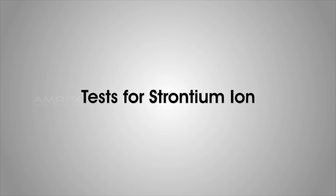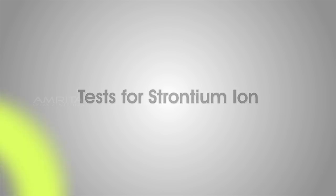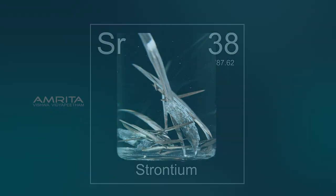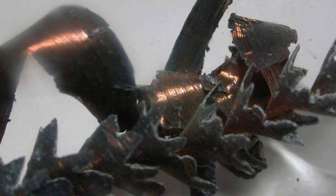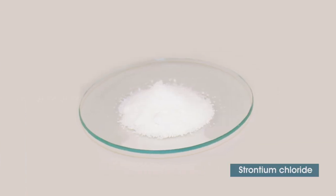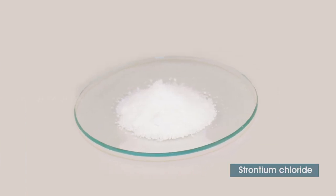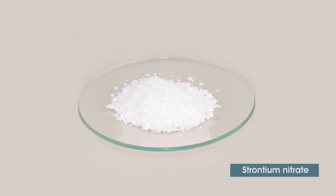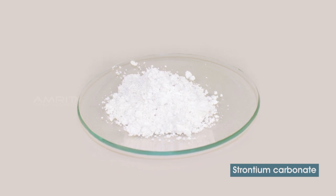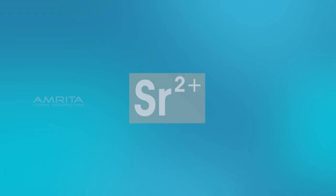Tests for the Strontium Ion. Strontium is a chemical element with symbol Sr. It is a soft grey silvery metal. It is found in various salts like strontium chloride, strontium nitrate and strontium carbonate as the strontium 2+ ion.